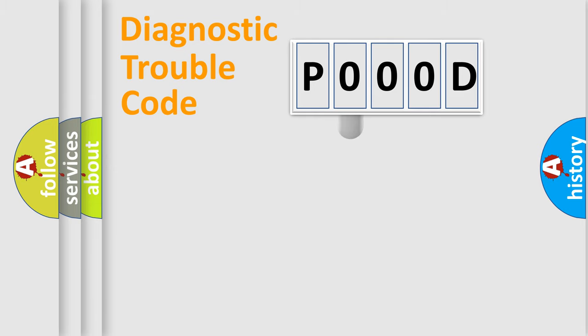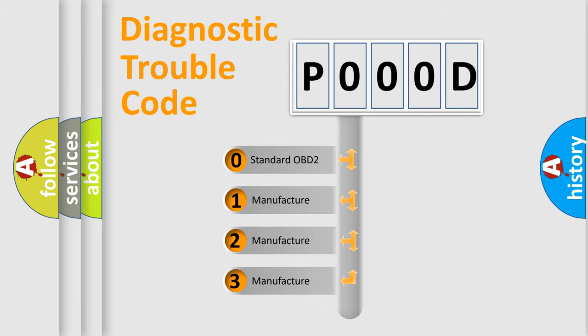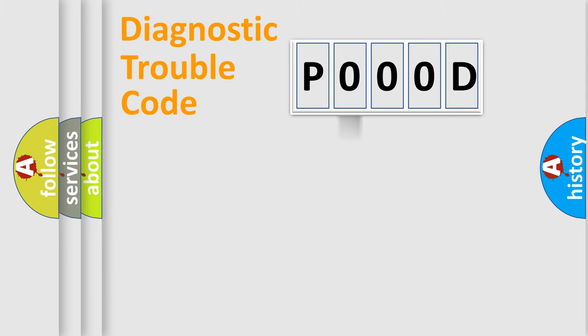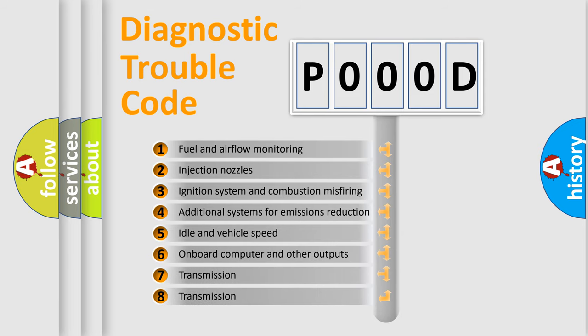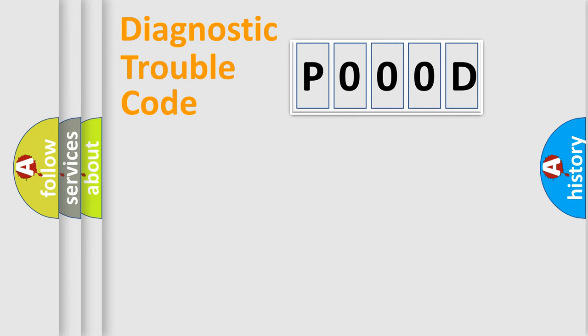This distribution is defined in the first character of the code. If the second character is expressed as zero, it is a standardized error. In the case of numbers 1, 2, or 3, it is a manufacturer-specific error expression. The third character specifies a subset of errors. The distribution shown is valid only for the standardized DTC code.